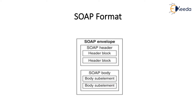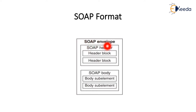The format of SOAP consists of an envelope, which in turn consists of a SOAP header and a SOAP body. The header has two blocks and the body has two sub-elements. The envelope defines the start and end of the message and is a mandatory element. The header contains any optional attributes of the message used in processing the message, either at an intermediary point or the ultimate endpoint. The header is an optional element.